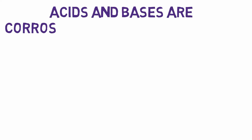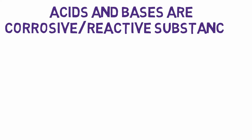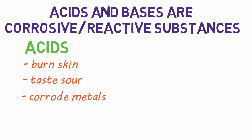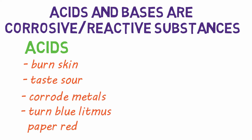Acids and bases are both corrosive substances that react with and damage or destroy substances they come in contact with. Acids can burn the skin and cause pain, usually have a sour taste, can corrode metals, and turn blue litmus paper red.